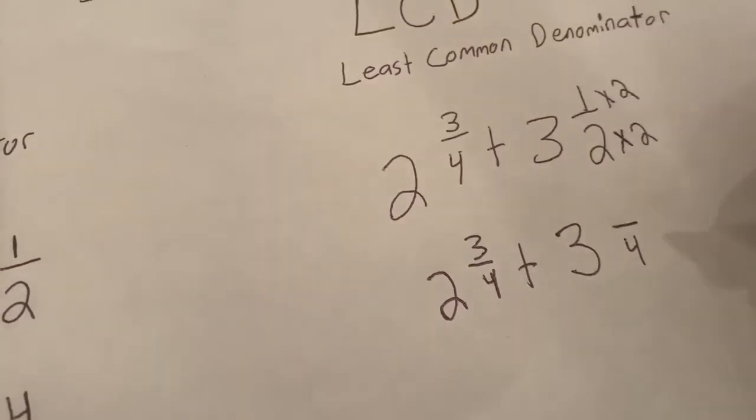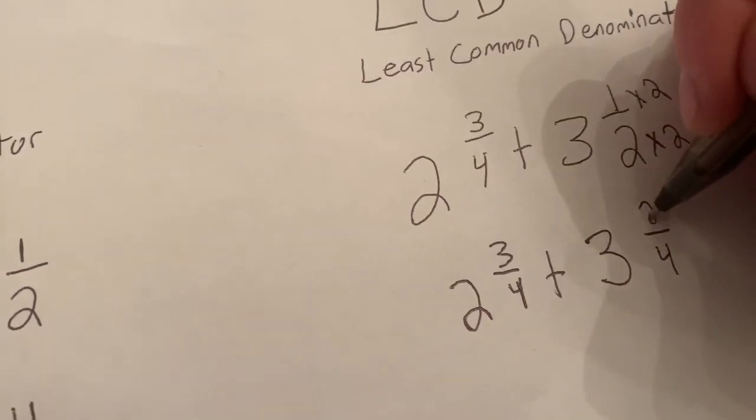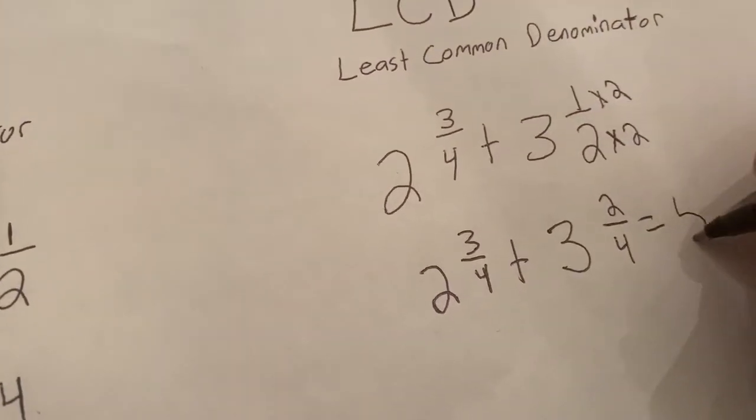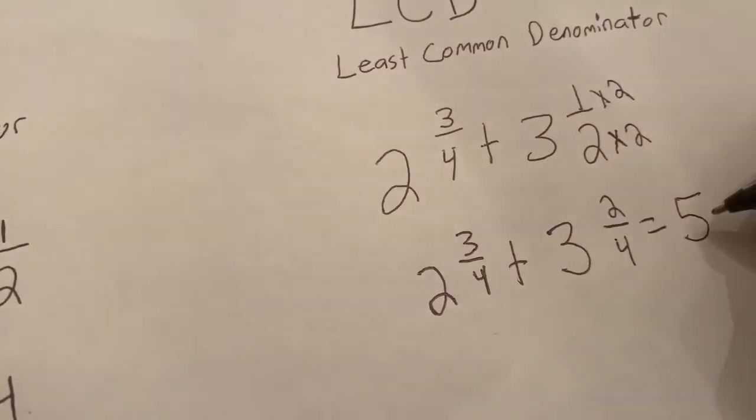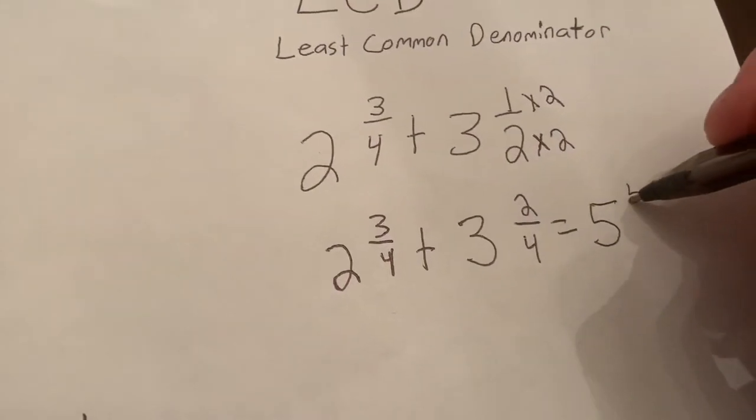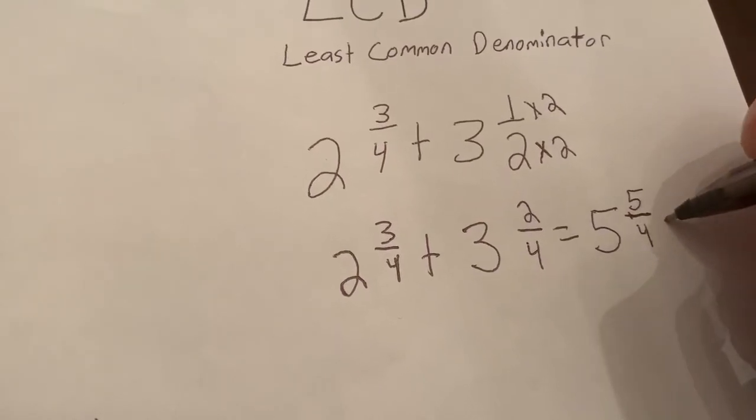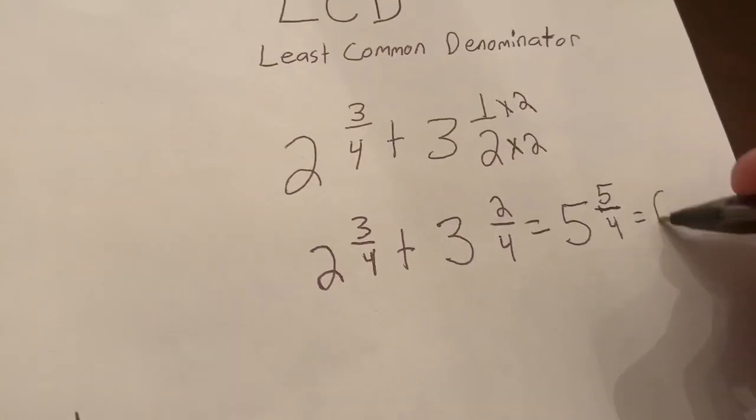So now I combine my whole numbers, that's 5, and then I have 3 fourths plus 2 fourths, which is 5 fourths. And then I can simplify this and change that into 6 and 1 fourth.